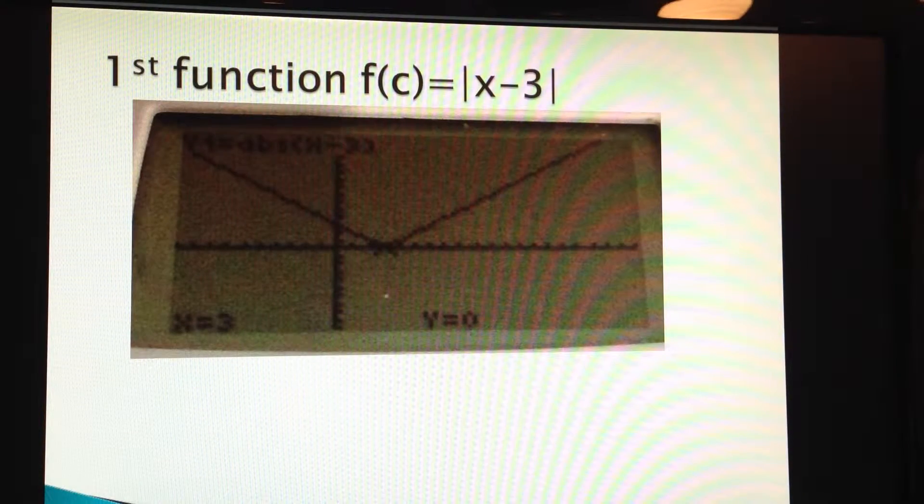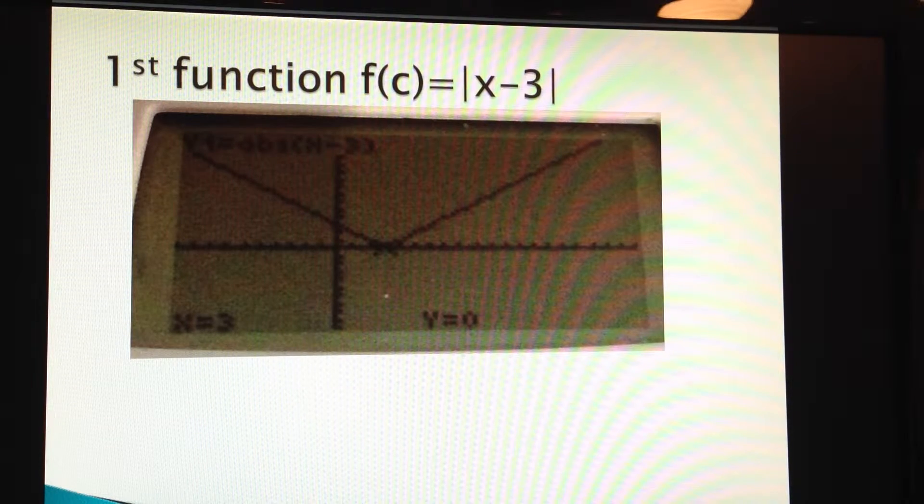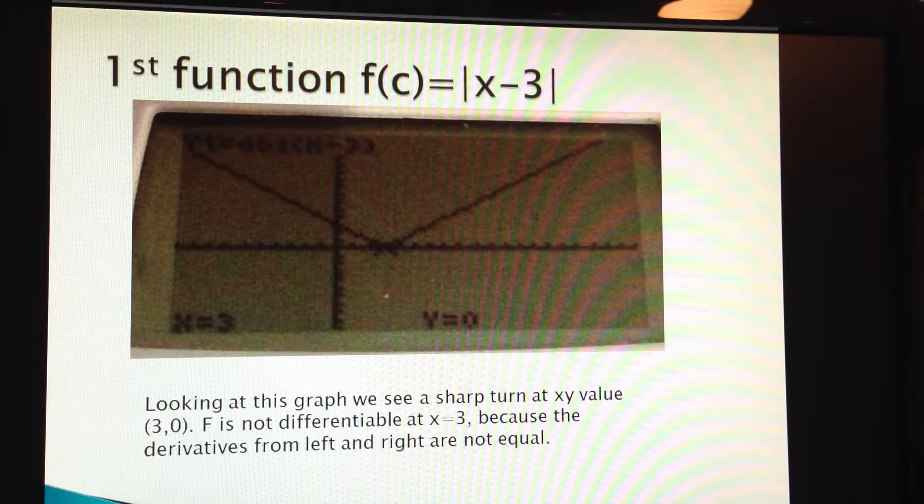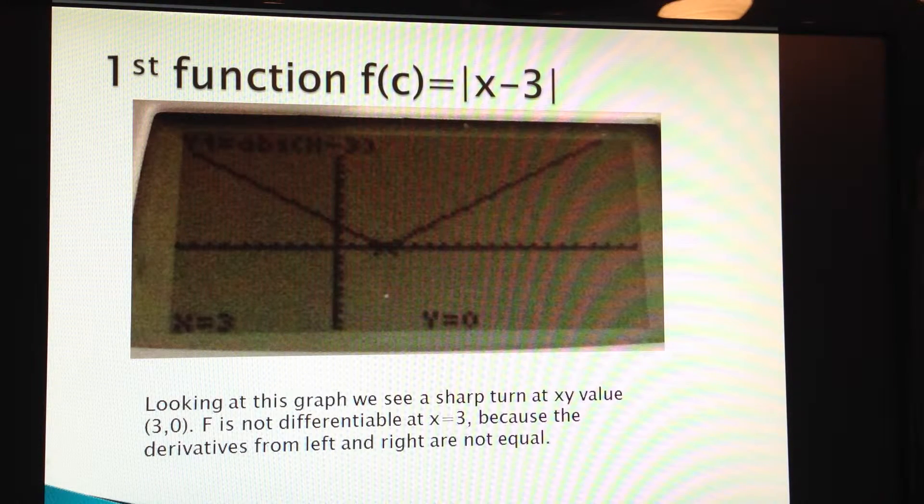The first one we're going to look at is f of c equals the absolute value of x minus 3. Looking at the graph right away, we see from the left there's a negative slope, and from the right there's a positive slope.